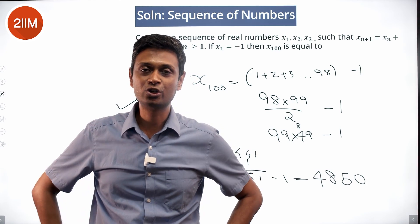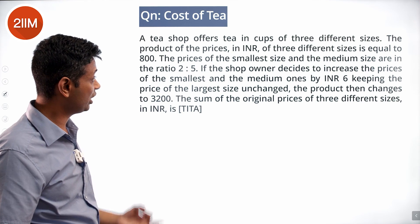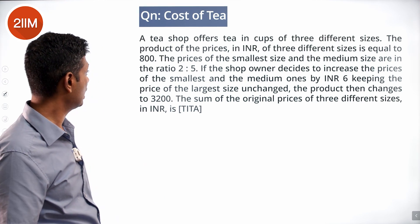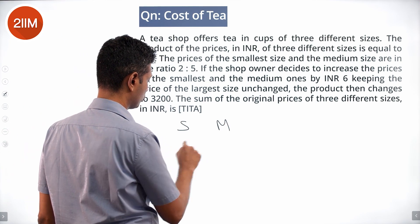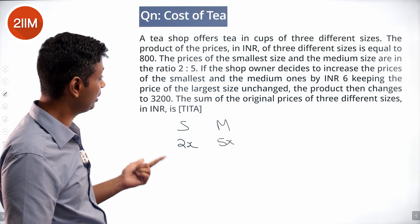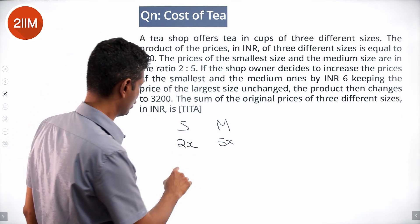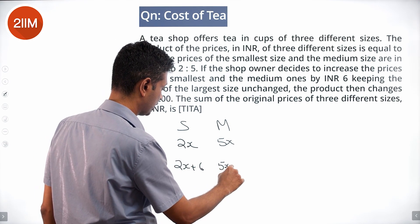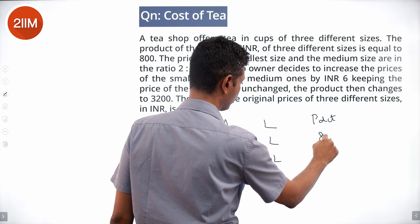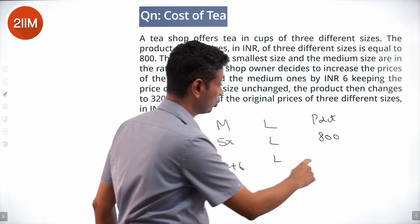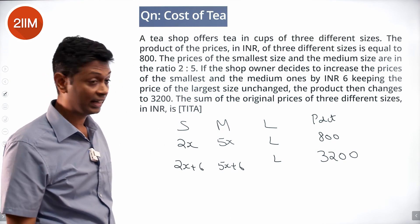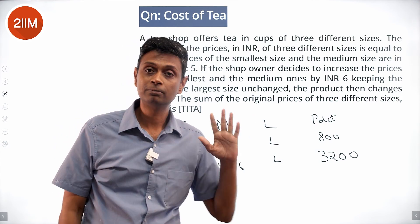A tea shop sells tea in three sizes. The product of prices = 800. Small:medium = 2:5, so prices are 2x, 5x, and L. When small and medium increase by 6 (to 2x+6 and 5x+6, L unchanged), product becomes 3200 = 4 × 800.